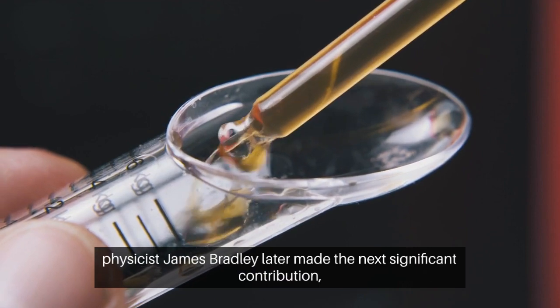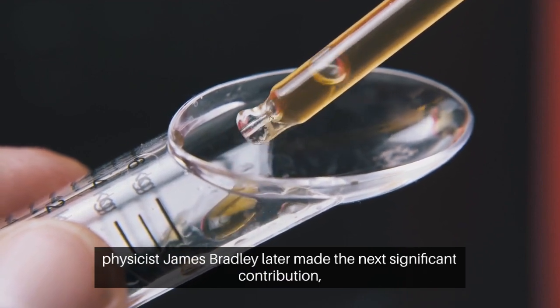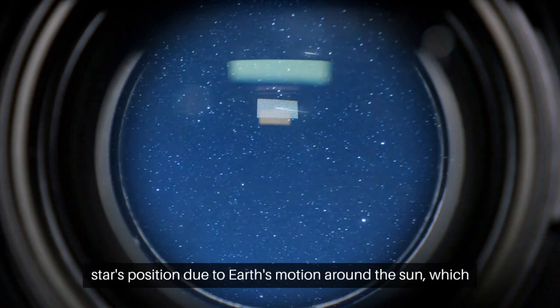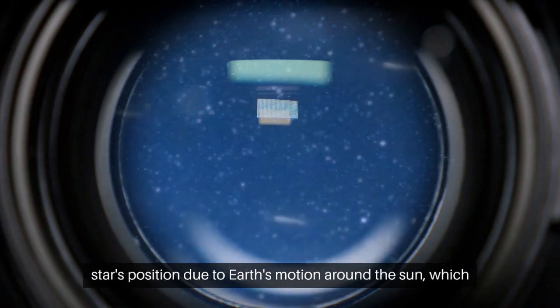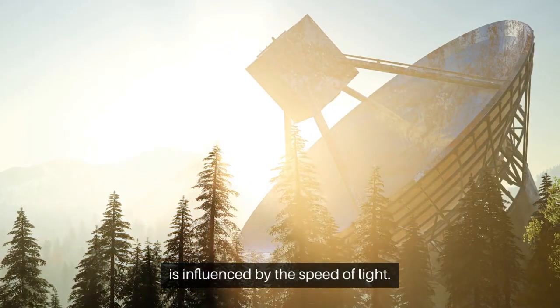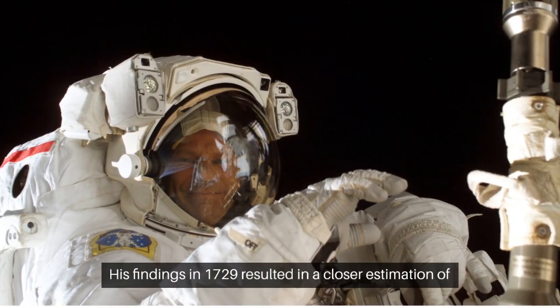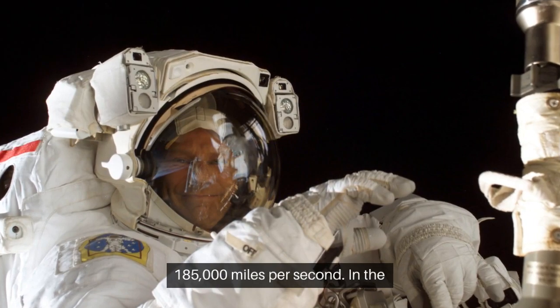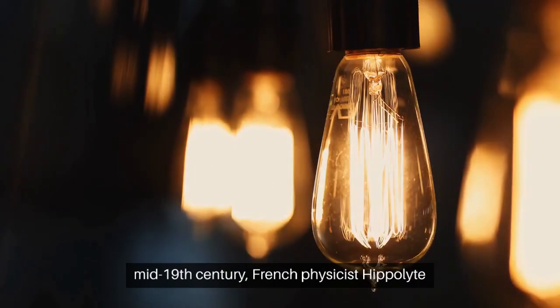English physicist James Bradley later made the next significant contribution, measuring stellar aberration, or the apparent shift in a star's position due to Earth's motion around the sun, which is influenced by the speed of light. His findings in 1729 resulted in a closer estimation of 185,000 miles per second.